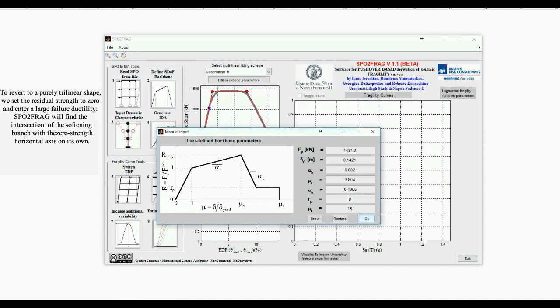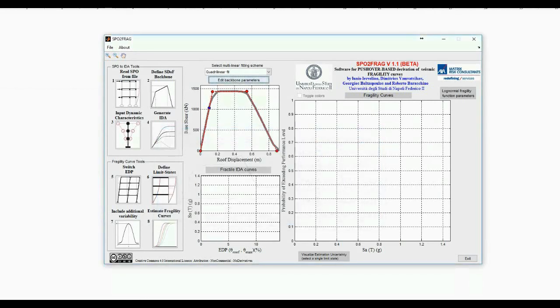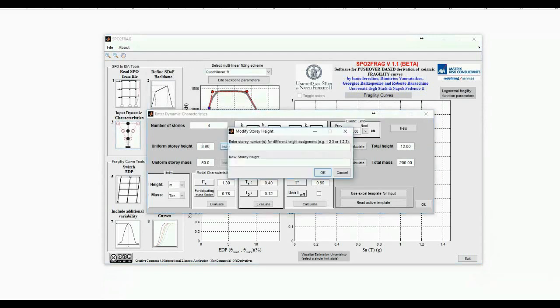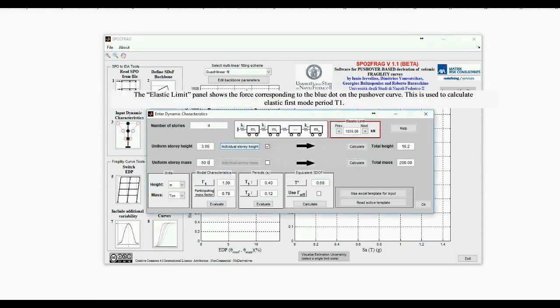We now press the Enter Dynamic Characteristics button and a new window opens. Number of stories is already set to 4 because SPO2FRAG read 4 displacement columns in the pushover file. Now, on to set story heights and masses. All stories are 3.96 meters high except for the first one. So we check the individual story height box, press the button and enter the story number and its own height of 4.34 meters.